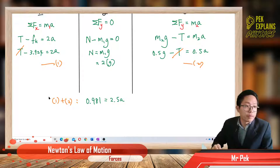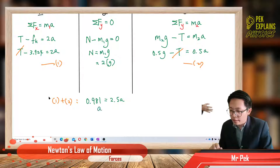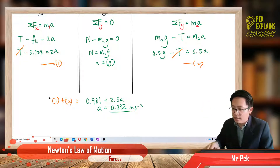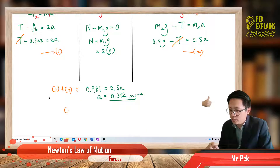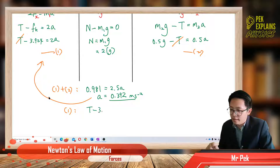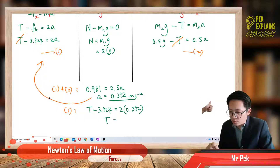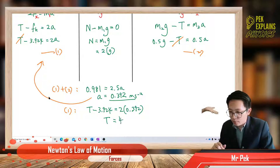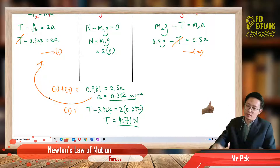Solving, acceleration = 0.392 m/s². Now substituting back into equation 1 to find tension: tension − 3.924 = 2 × 0.392, giving tension = 4.71 N. Those are our tension and acceleration values for Part B.